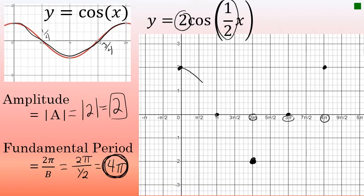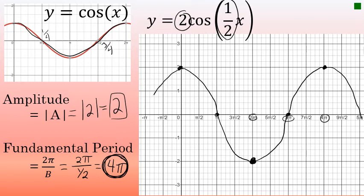With five key points identified, I join them with a smooth cosine curve. On screen you can now see one complete cycle of y equals two cosine one half x. This cycle takes up most of the coordinate plane, but I'll continue the curve to fill as much space as possible. From negative pi to positive five pi, this is what the graph of y equals two cosine one half x looks like.